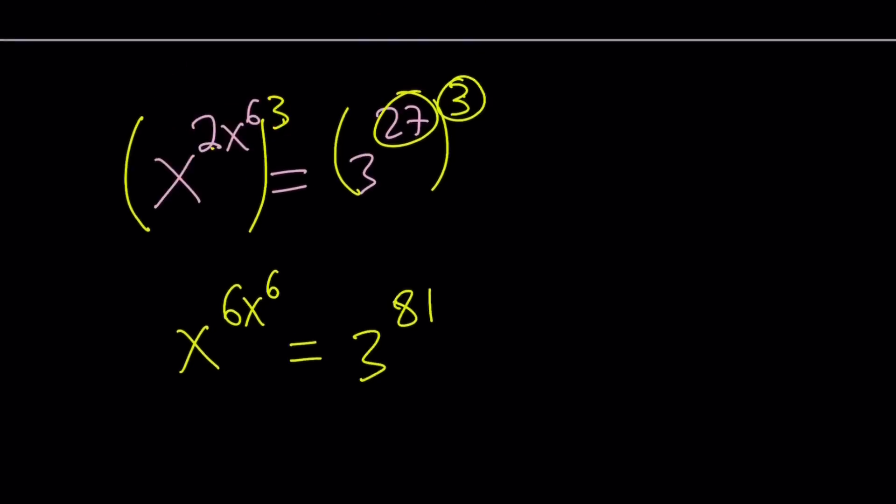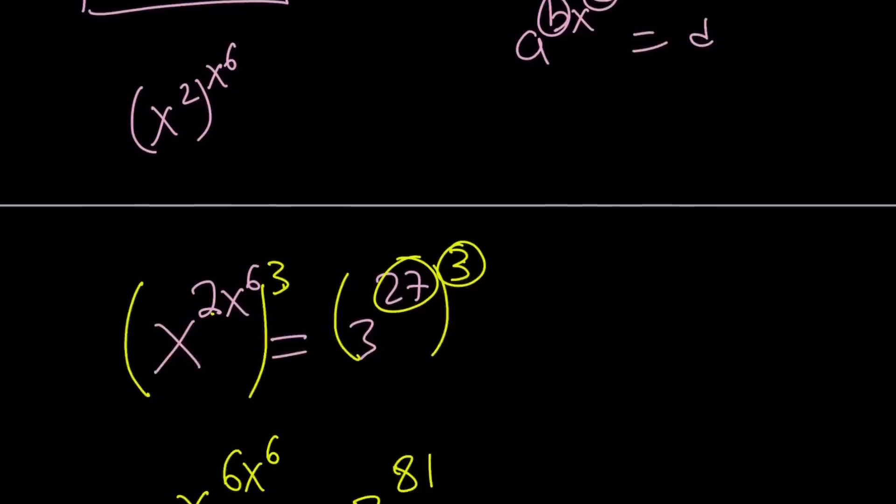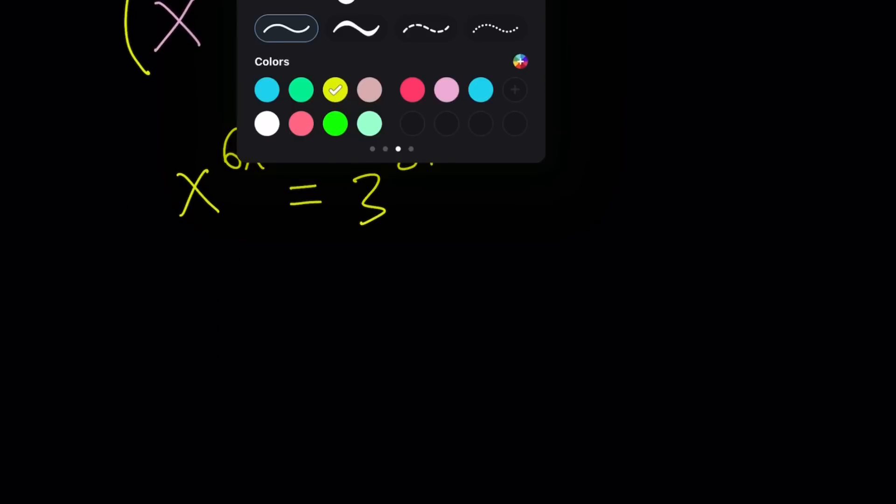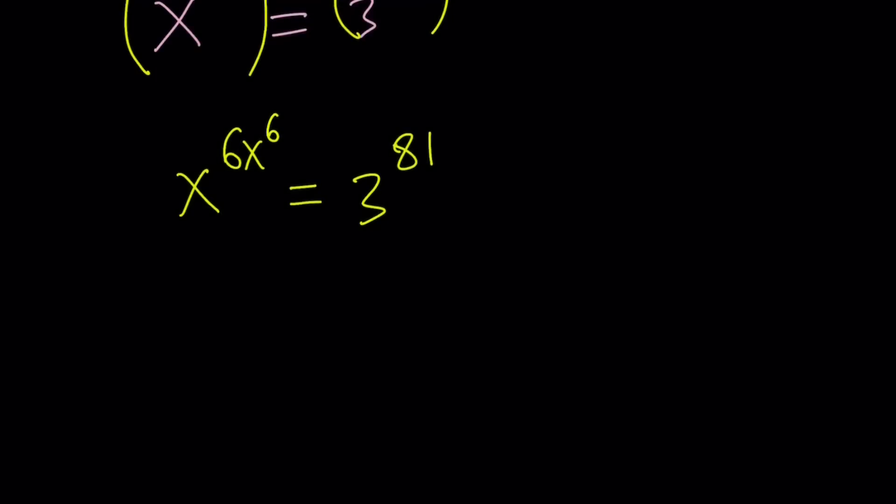Okay, so we still have to put it in this form: a to the power of a equals b to the power of b. Let's do it on the left-hand side first. Notice that 6 and x to the 6 are multiplied. Since we have a to the power m n, is a to the power m to the power n, we can put this 6 inside the parentheses and write this as x to the power 6 to the power x to the power 6.